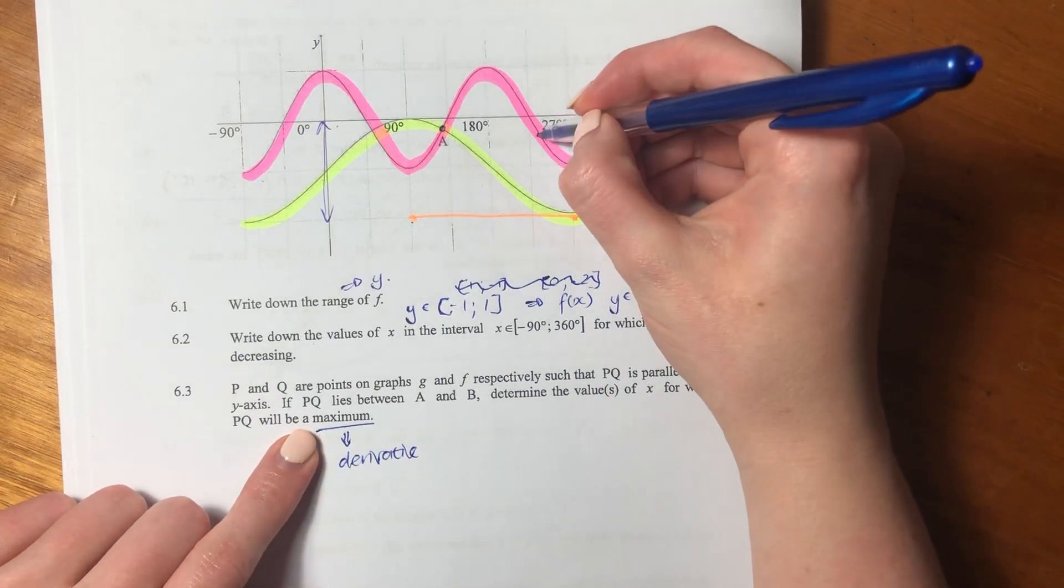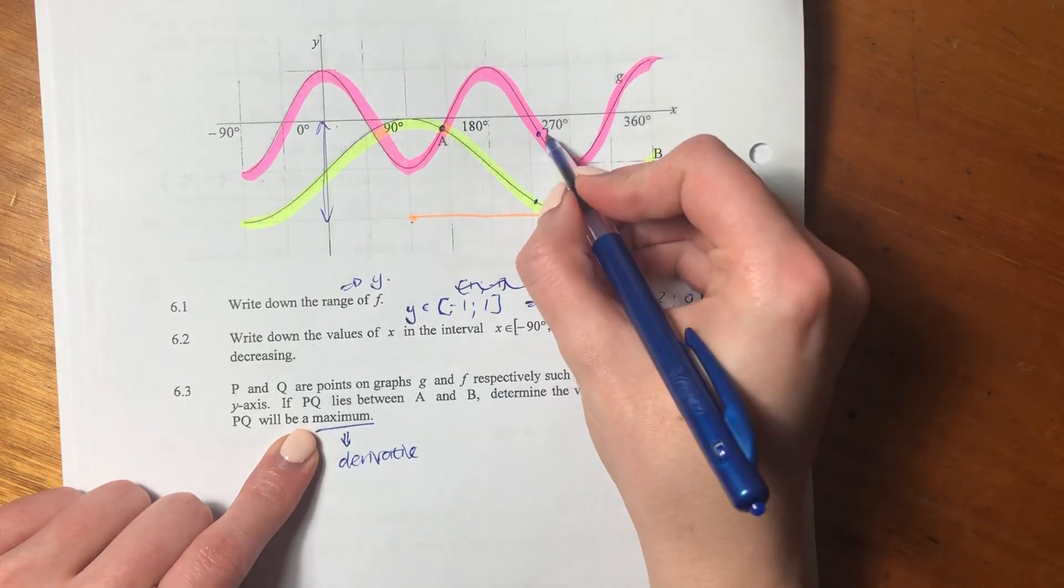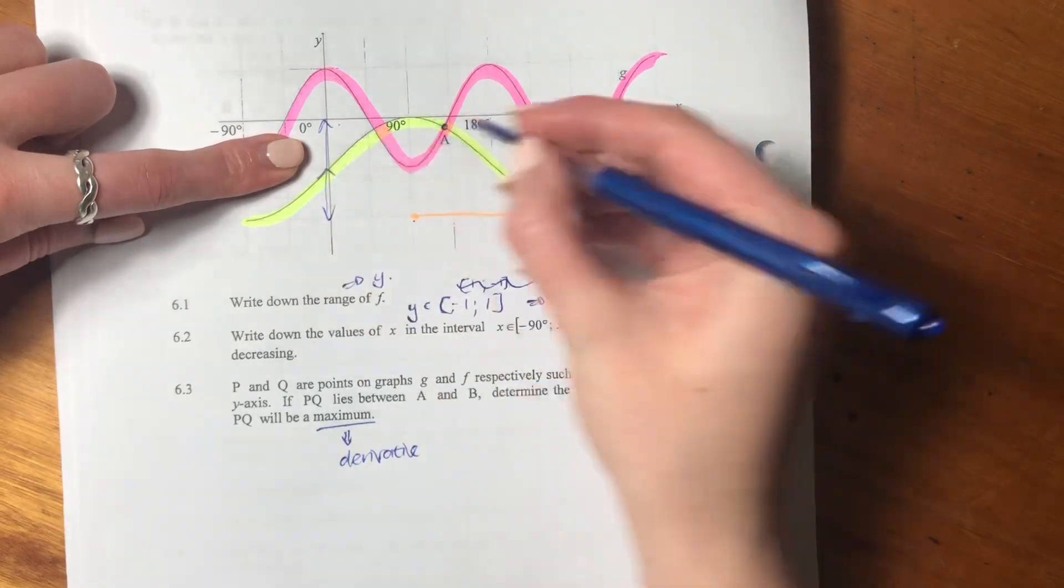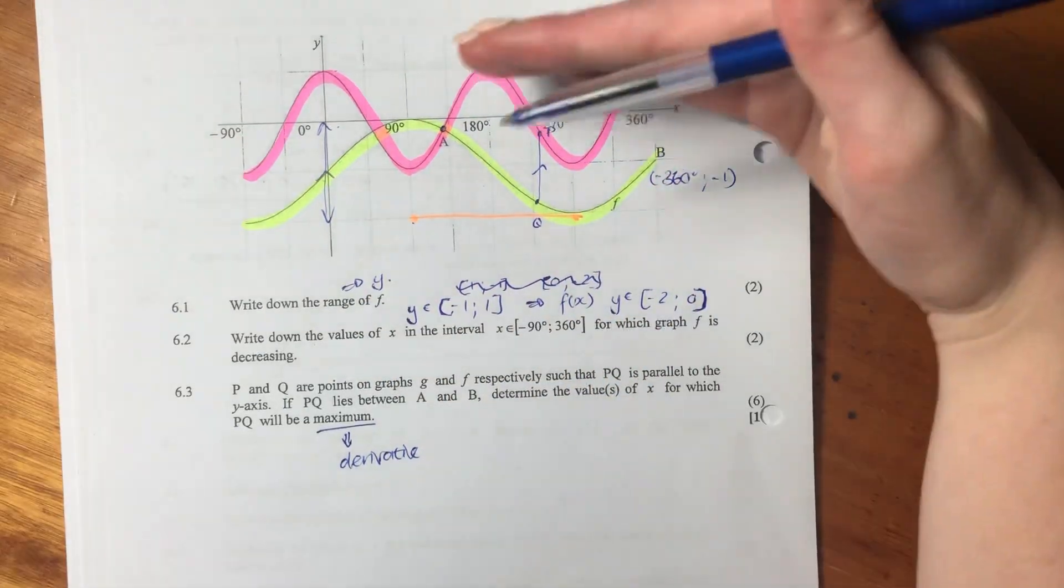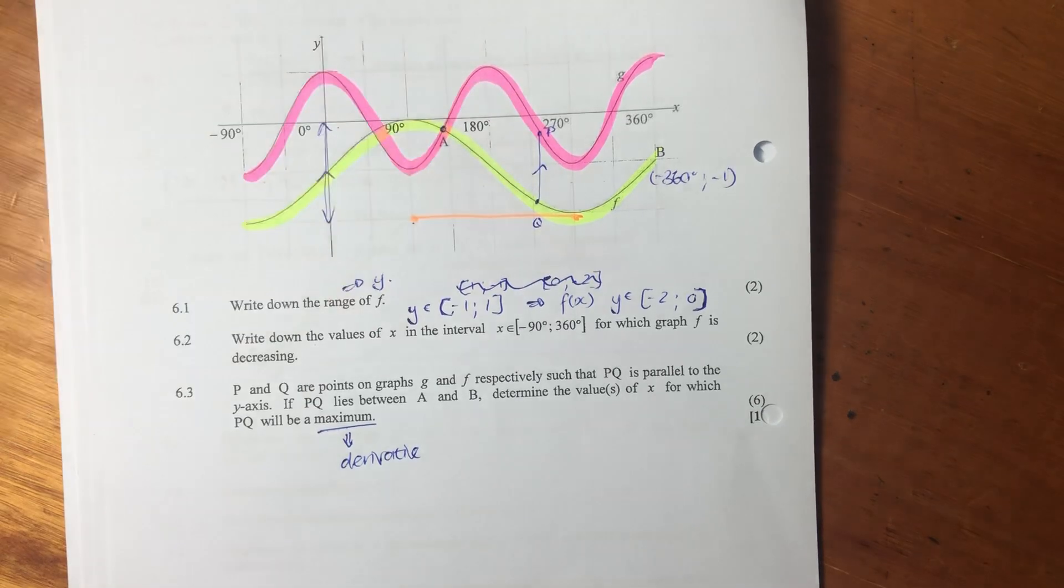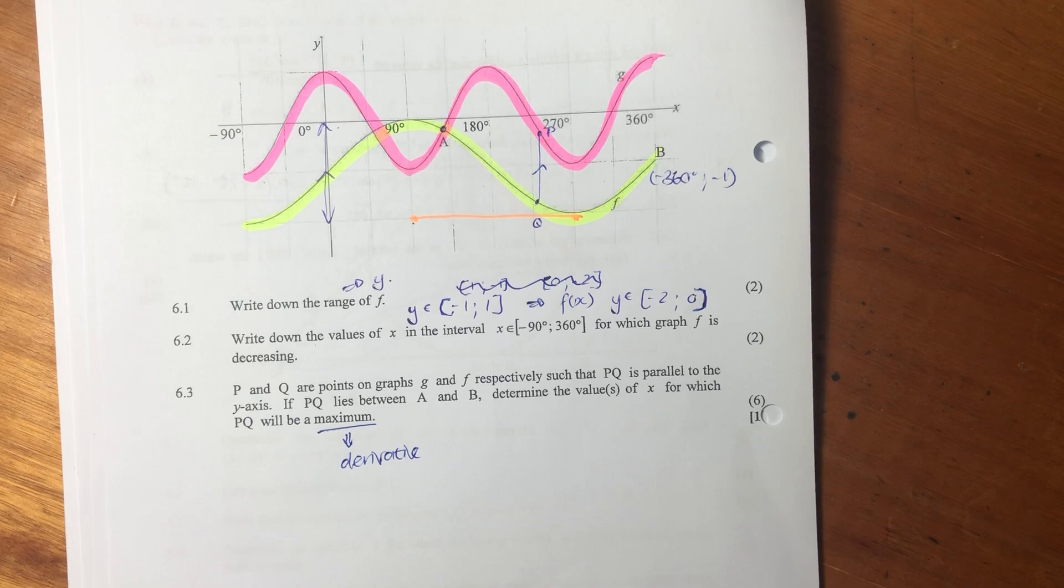So it's basically, I'm just going to draw it in here. This is not necessarily the point that it is a maximum, but just to show you what we're looking at. So it's this line that is parallel to the y-axis, that's between g and f. So we're going to say g minus f. We're talking about the distance between g and f, and we want that to be a maximum.